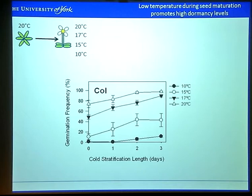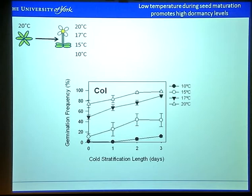We're measuring dormancy by the germination frequency — high germination levels indicate low dormancy and vice versa. When you mature the seeds at 20 degrees, you get very low levels of dormancy. Whereas when they're matured at 10 degrees, the dormancy is very high. In fact, the cold stratification that you would usually use to break dormancy has little effect when low temperature has induced these really strong dormancy levels.